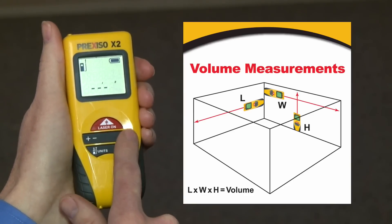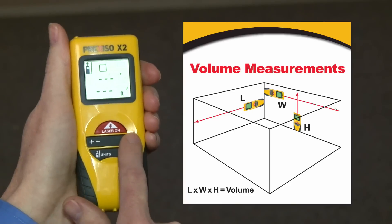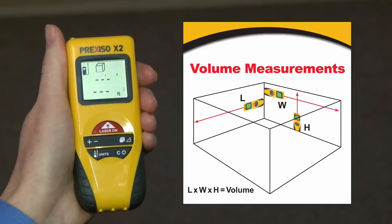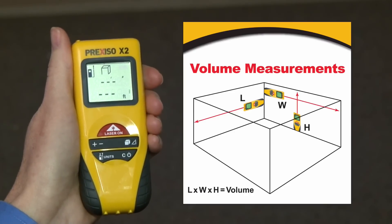This button right here is going to allow me to quickly toggle through my choices for the measurement I want to take. By pressing it twice, we're telling the device we want to measure a cubic volume, and you'll see a square cube shape appear in the display.